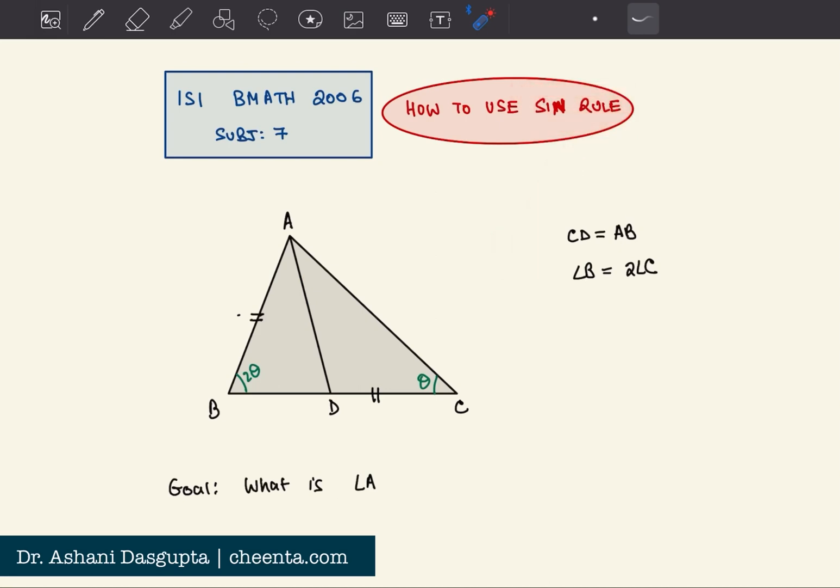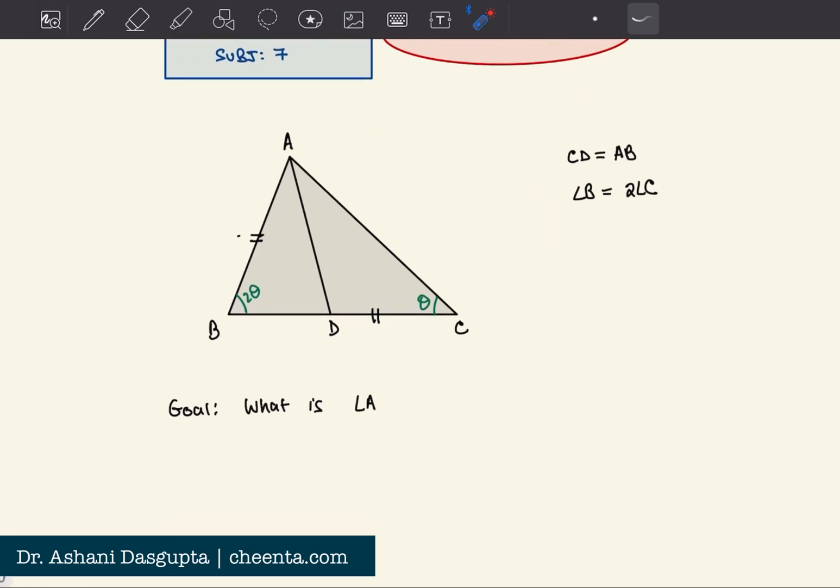First let me tell you about the problem. Suppose we have a triangle ABC such that angle B is twice angle C. So if angle C is theta, then angle B is twice theta. And it's also given that CD is equal to AB.